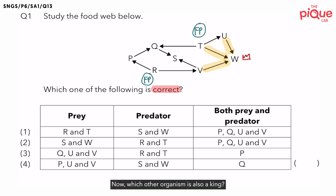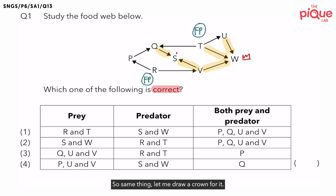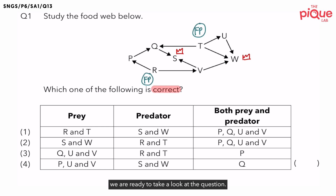Which other organism is also a king? We also have organism S, because the arrows are pointing towards it, so I'll draw a crown for it too. There are no other kings. Now, since we have already identified who are the food producers and kings, we are ready to take a look at the question.